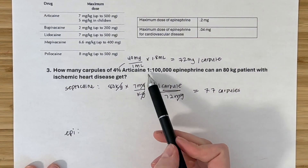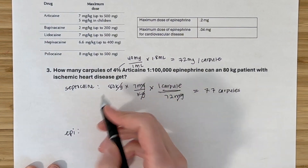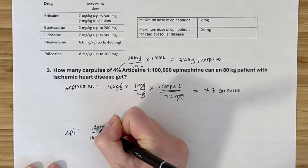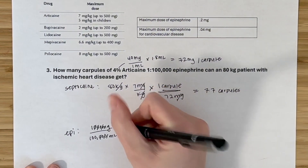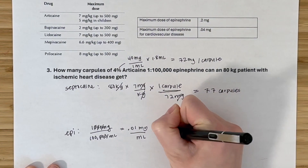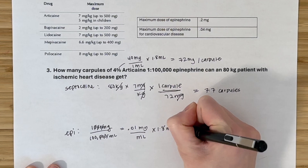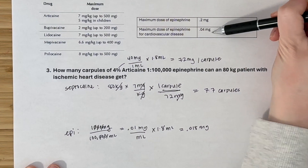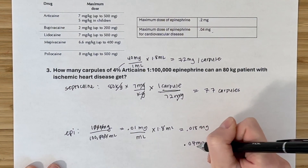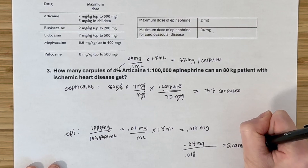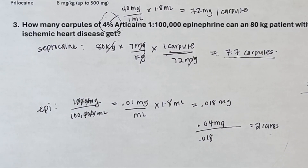For epinephrine: 1:100,000 equals 0.01 milligrams per milliliter. Times 1.8 milliliters per carpule gives 0.018 milligrams per carpule. Because this patient is cardiovascularly compromised, their epinephrine maximum is 0.04 milligrams. So 0.04 ÷ 0.018 gives about 2 carpules. The epinephrine is the limiting factor here, so this patient can receive a maximum of approximately 2 carpules. I hope you found this useful — leave comments below and I'll get to them as soon as I can.